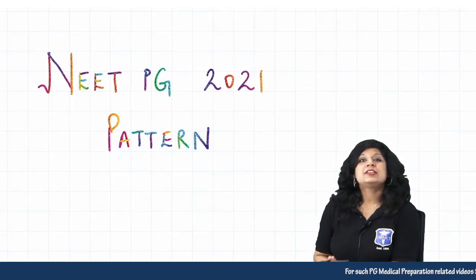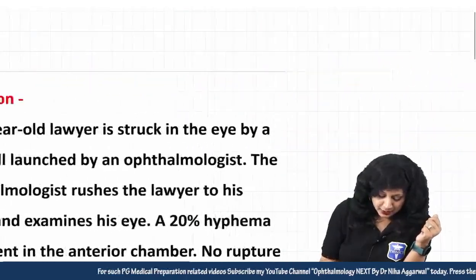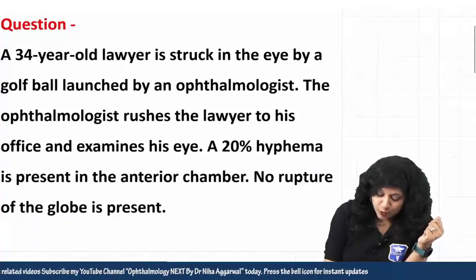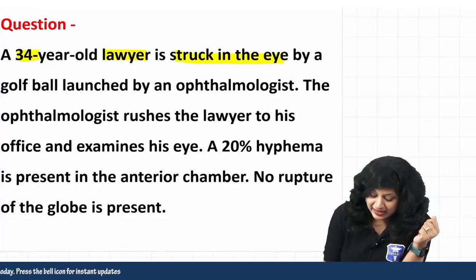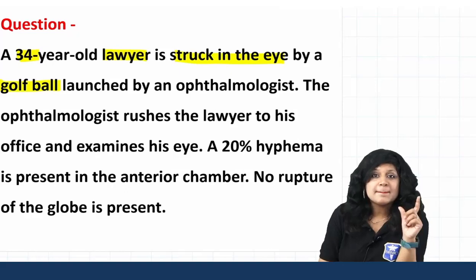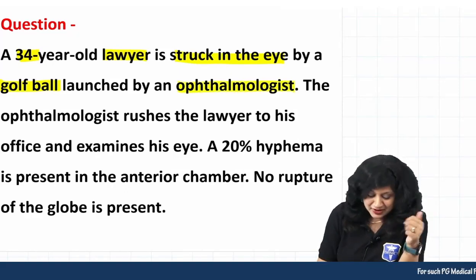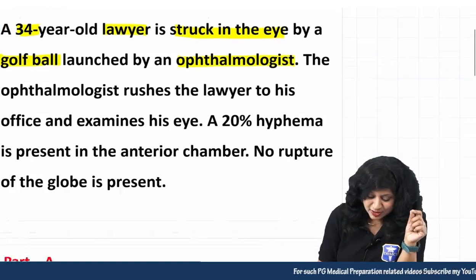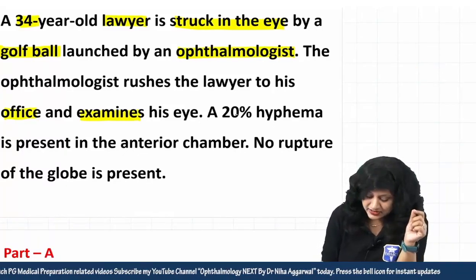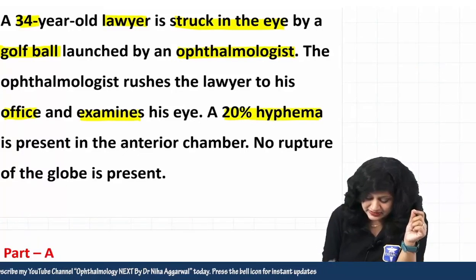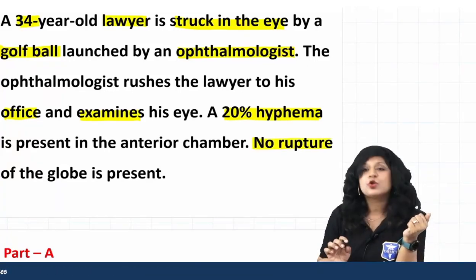Hello guys, welcome to the NEET PG 2021 pattern question. Let's see the question. A 34-year-old lawyer is struck in the eye by a golf ball — a blunt trauma injury, as noted by an ophthalmologist. The ophthalmologist rushes the lawyer to his office and examines the eye, finding a 20% hyphema present in the anterior chamber. Importantly, no rupture of the globe is present.